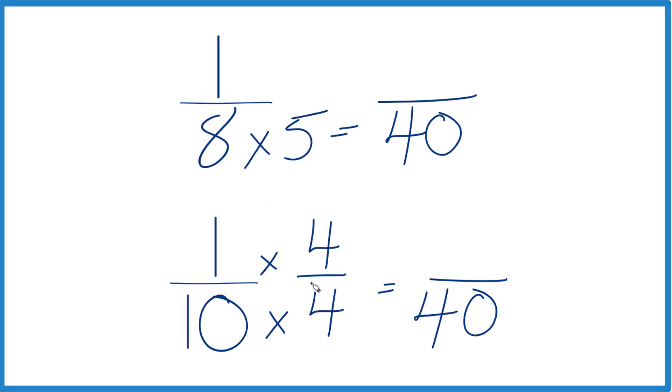That's because 4 over 4 is just 1, we're dividing 4 by 4, we get 1, so we don't change the value when we multiply by 1. 1 times 4 is 4, and 4/40, that's an equivalent fraction to 1/10.